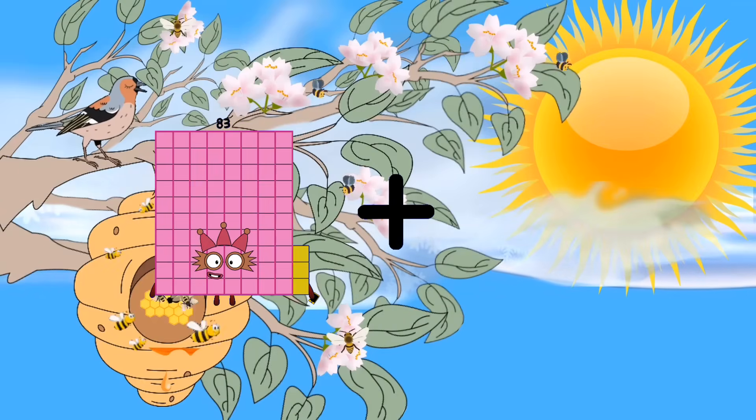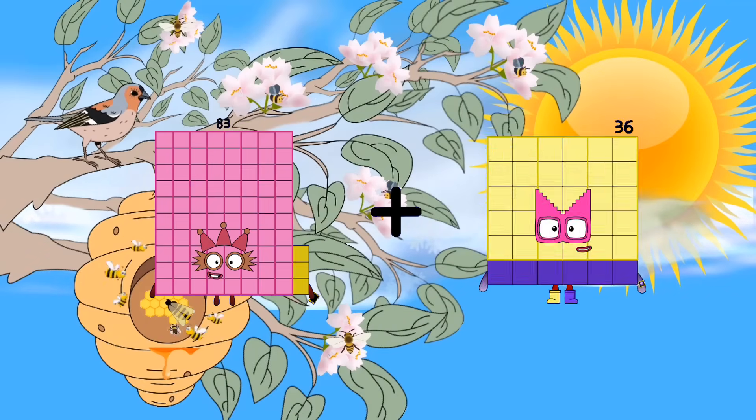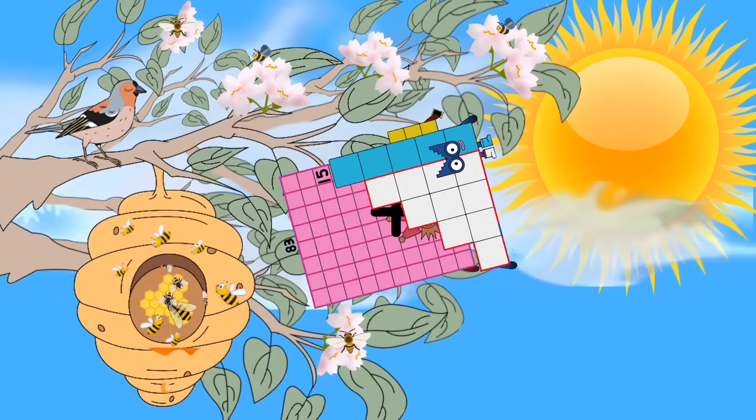Eighty-three plus fifteen equals ninety-eight.